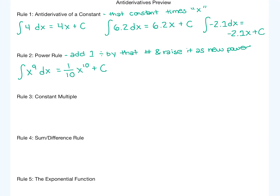Let's do that same thing again with another power. Say we have the antiderivative of x to the 4th. 4 plus 1 is 5, so we get 1 over 5 times x to the 5th, plus c. So we're going to add 1, divide by it, and raise it as our new power.